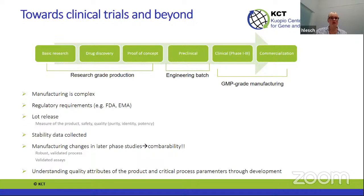What happens when the product goes toward the clinic? Research creates production in traditional flasks, which is totally fine. For pre-clinical studies, you should use virus produced in an already-defined process. Preclinical official safety and toxicology studies should be done with material that mimics GMP-grade manufacturing, but the products do not yet need to be produced under GMP. GMP manufacturing is quite complex and really differs from standard lab manufacturing. We need to follow regulatory requirements set by FDA in the US and EMA in Europe, with Asia having its own regulatory systems.